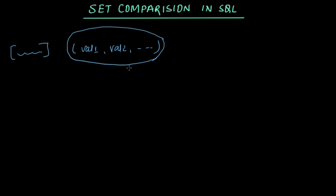So what are the set comparison operators we have? We have three set comparison operators to learn here. The first one is IN, the second one is ANY, and the third one is ALL.